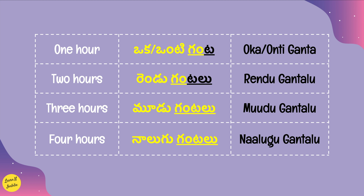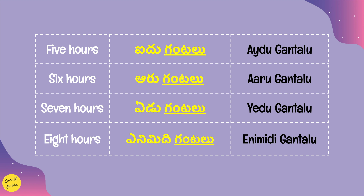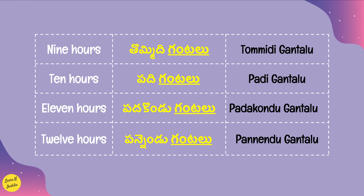1 hour in Telugu, 2 hours, 3 hours, 4 hours, 5 hours, 6 hours, 7 hours, 8 hours, 9 hours, 10 hours, 11 hours, 12 hours — these are the hours from 1 to 12 as spoken in Telugu.